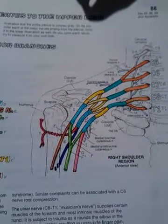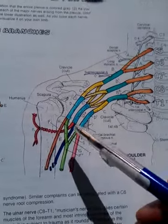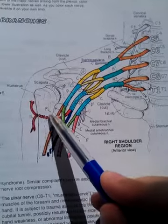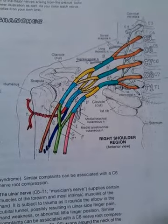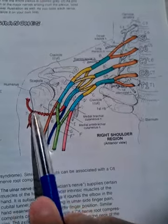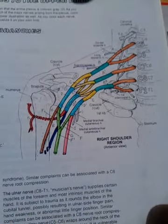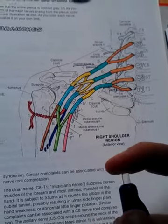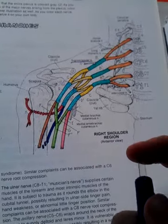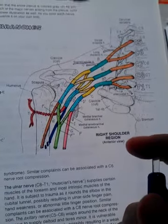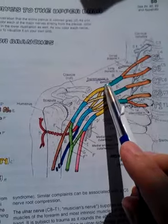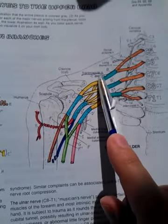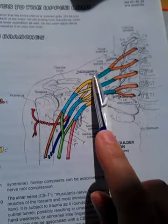The nerve supply of these muscles: in red you have the axillary nerve, which supplies the deltoid muscle and teres minor. Then you have the subscapular nerve, which supplies the subscapularis muscle and teres major. Then you have the suprascapular nerve, which supplies the supraspinatus and infraspinatus.